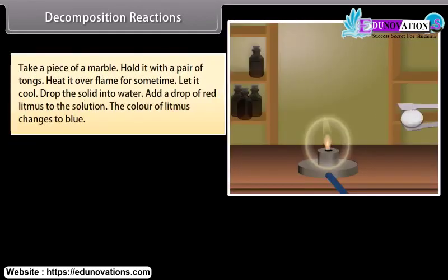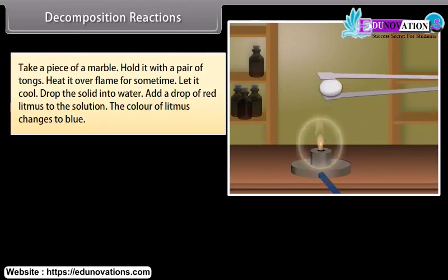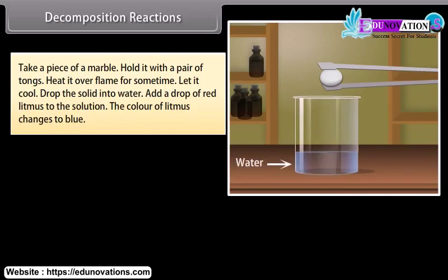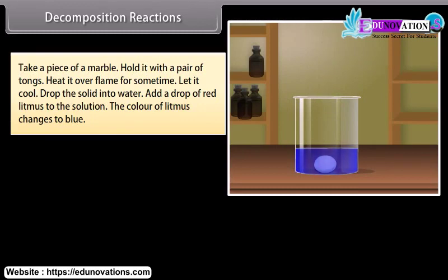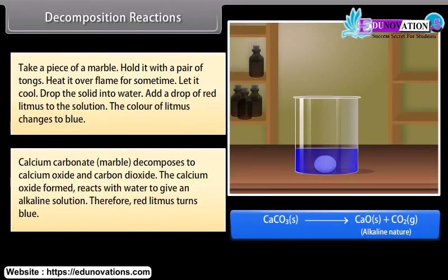Take a piece of marble. Hold it with a pair of tongs. Heat it over flame for some time. Now let it cool. Drop the solid into water. Add a drop of red litmus to the solution. The color of litmus changes to blue. Calcium carbonate marble decomposes to calcium oxide and carbon dioxide. The calcium oxide formed reacts with water to give an alkaline solution. Therefore, red litmus turns blue.